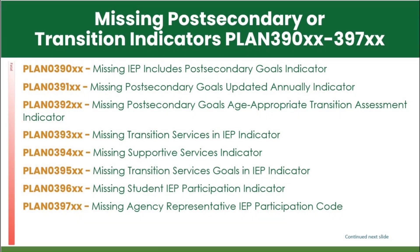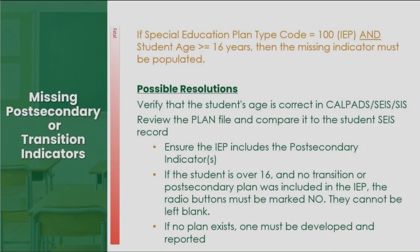There are multiple errors associated with postsecondary and transition plan indicators. For students over 16, the indicators must be marked Yes or No. Using the View button in the report, you can identify the specific record that needs to be updated from NA to Yes or No.